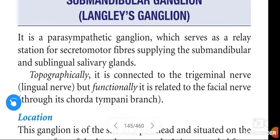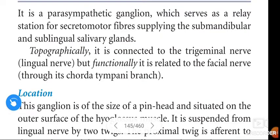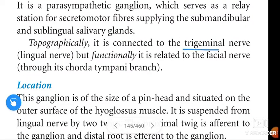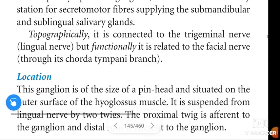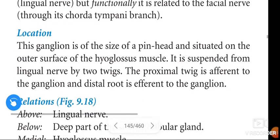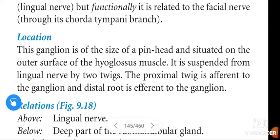The submandibular ganglion is a parasympathetic ganglion which serves as a relay station for secretomotor fibers supplying the submandibular and sublingual salivary glands. Topographically it is connected to the trigeminal nerve via the lingual nerve, but functionally it is related to the facial nerve through its chorda tympani branch.